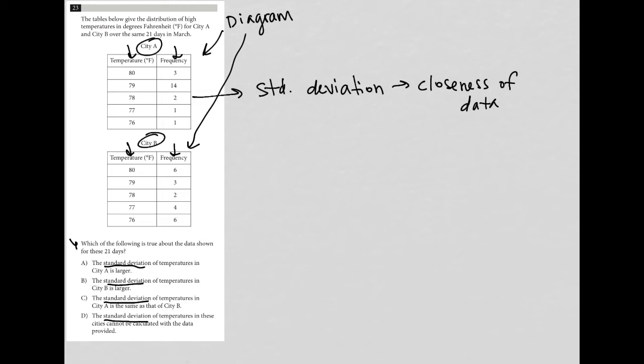If the data points are very close together then it has a low standard deviation if the closeness of the data is more spread apart it has a higher standard deviation right so close equals low spread equals high.